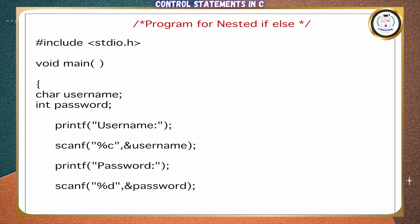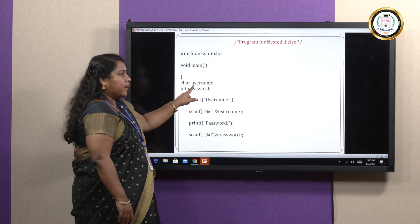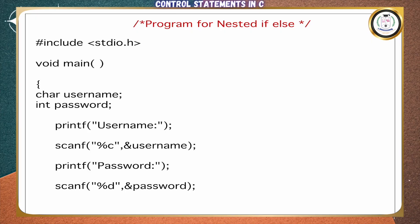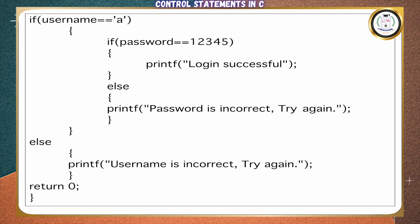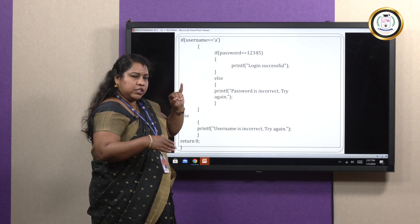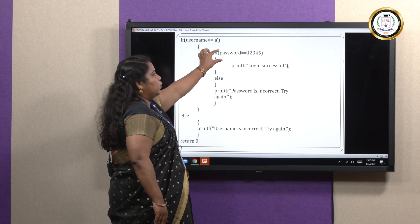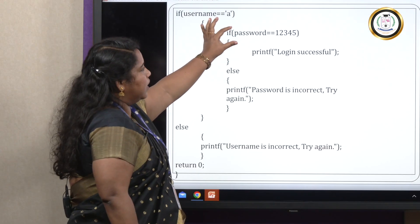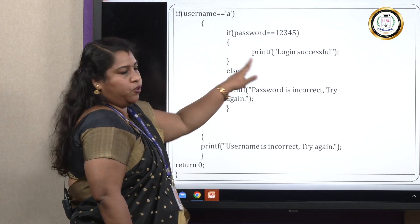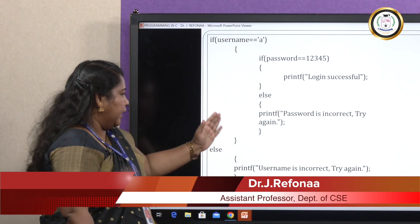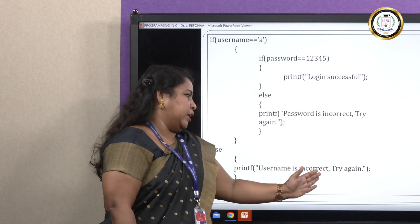Looking at the program: we have the header file and main function where execution begins. We are giving two inputs — one character input and one integer input for username and password. We check the first condition: if username equals 'A', it enters the inner if block and checks if password equals 12345. If that condition is true, it prints 'login successful'; else it prints 'password is incorrect, try again'. If initially the input is not 'A', it goes to the last else block and prints 'username is incorrect'.